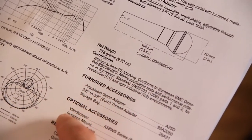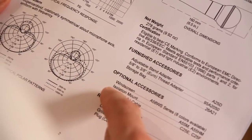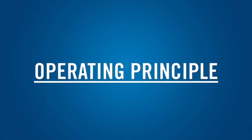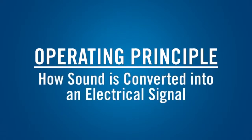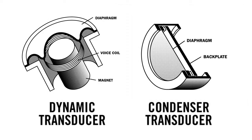These specifications fall into four general categories. In this segment, we'll discuss the operating principle. The operating principle describes the type of transducer that the microphone uses to convert sound into an electrical signal. The most common transducer types are dynamic and condenser.